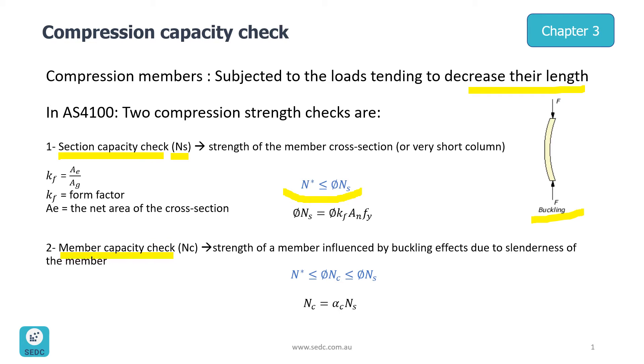NS star is our design action which is our axial load applied on the member from analysis, and Phi is a reduction factor which we can get from a relevant table from AS4100.